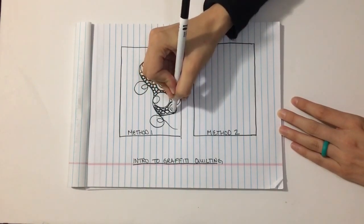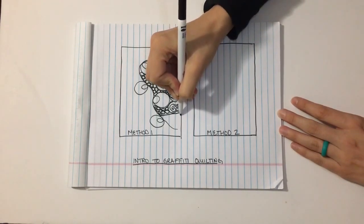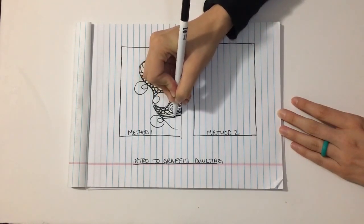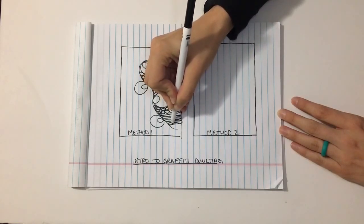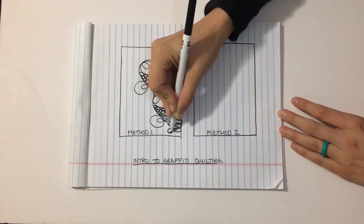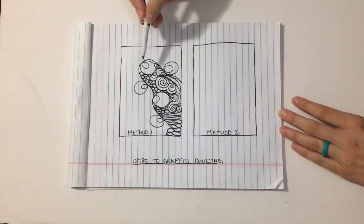You can also add familiar border designs like switchbacks, or that was going to be ribbon candy, but I didn't transition very well, did I? But you'll just use this to fill in the whole area where you're quilting.